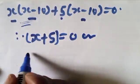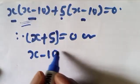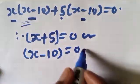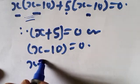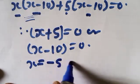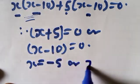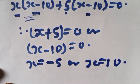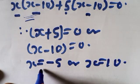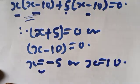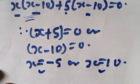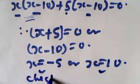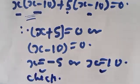Therefore x plus 5 equals 0 or x minus 10 equals 0, giving x equals minus 5 or x equals 10. We need to check which solution satisfies the original equation, since squaring can introduce extraneous solutions.